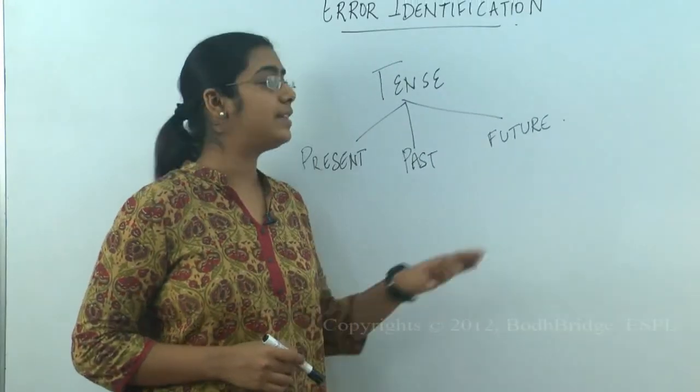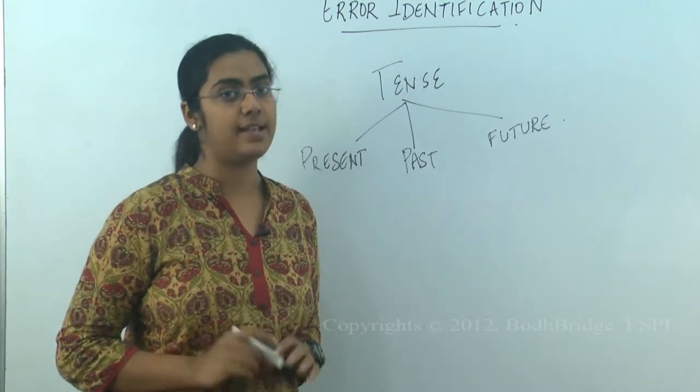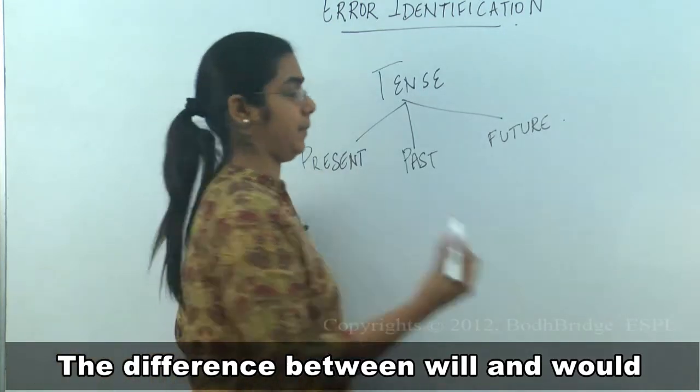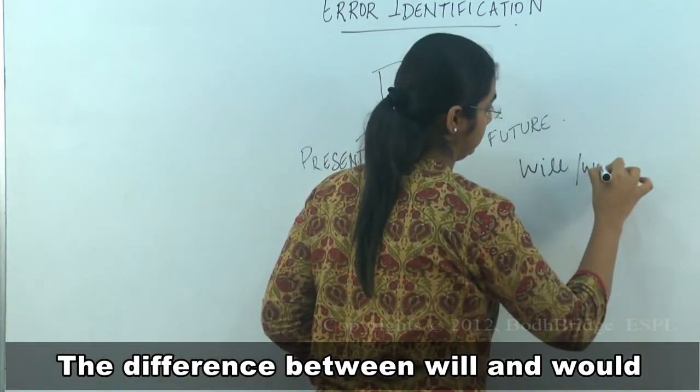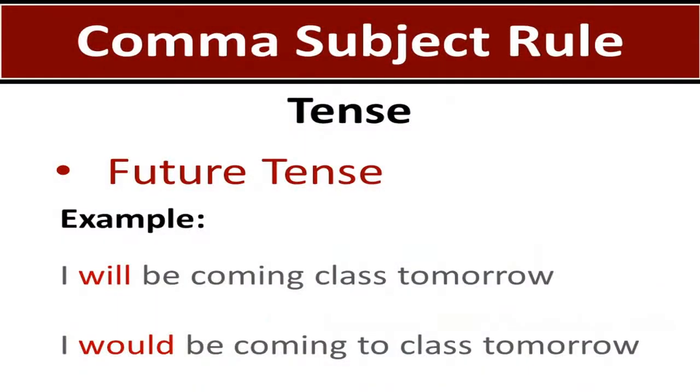Let's look into future tense. What is pretty important in future tense is the difference between will and would. Look into this example. I will be coming to class tomorrow. I would be coming to class tomorrow. What do you think is the difference between the two sentences that I just stated?